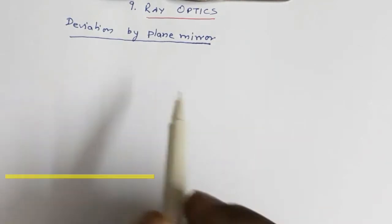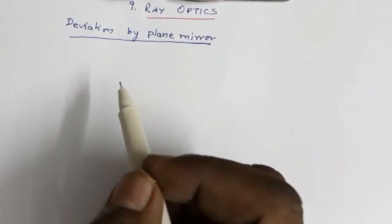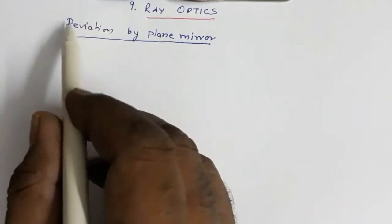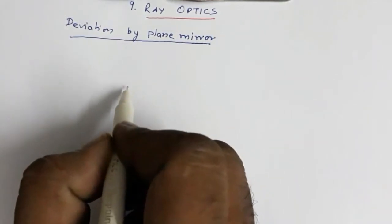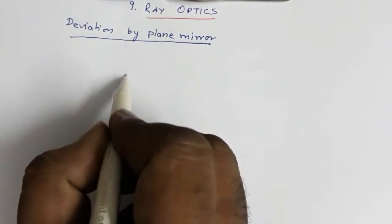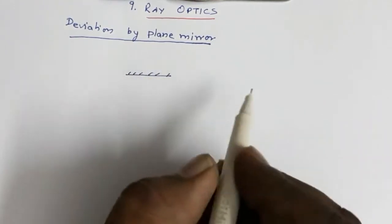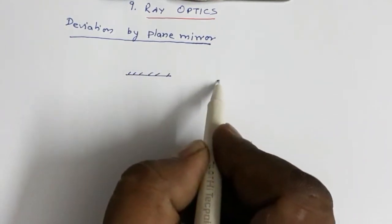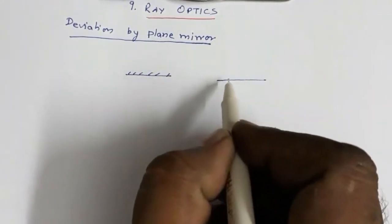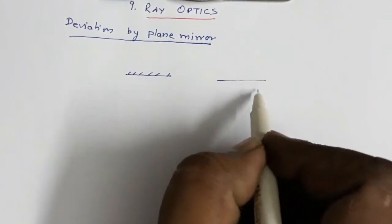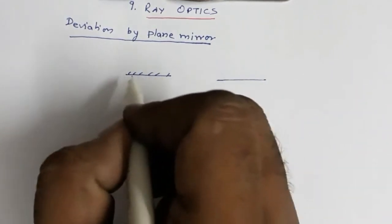Now, deviation by plane mirror — what do you mean by deviation? We need to understand this term. Deviation means if a ray gets turned — deviation can occur in a plane mirror as well as a refractive medium. Suppose this is the interface between two media, and this is a plane mirror.